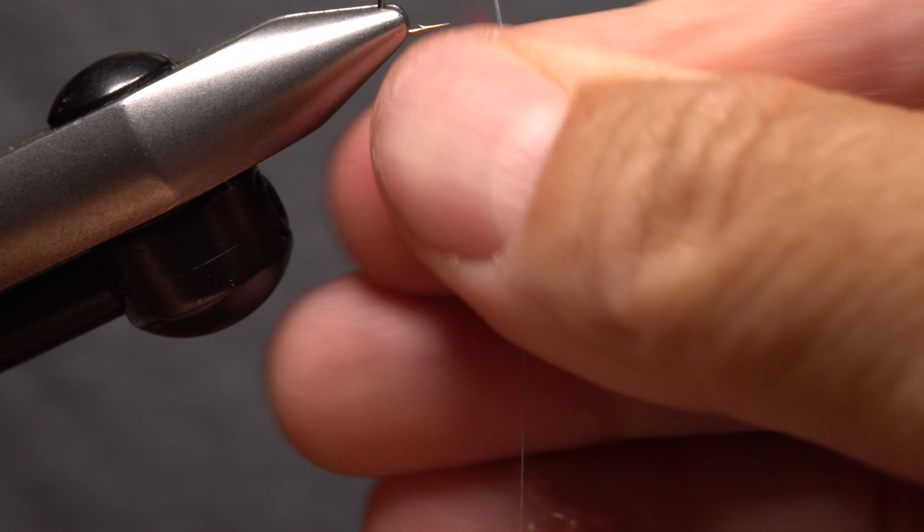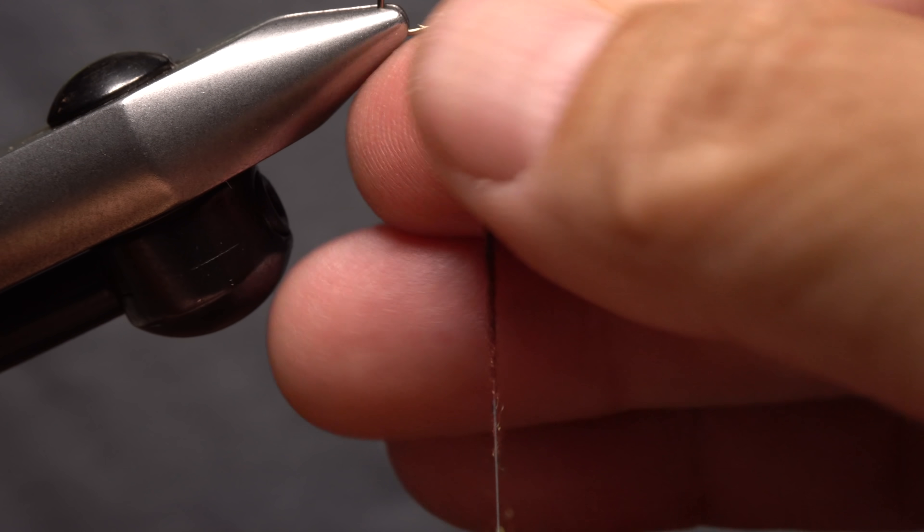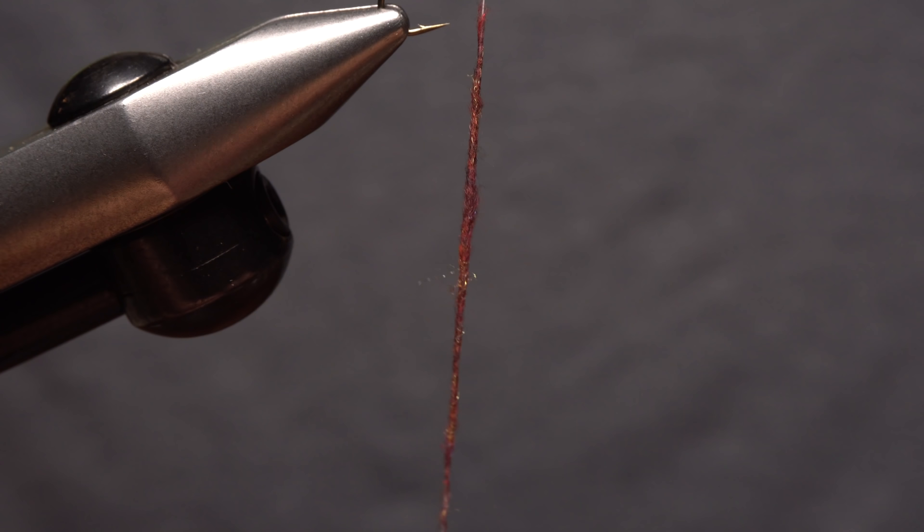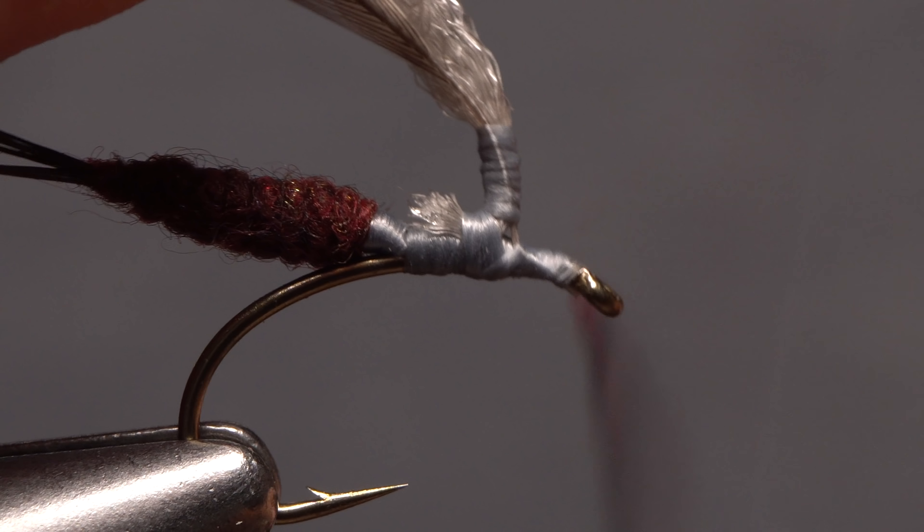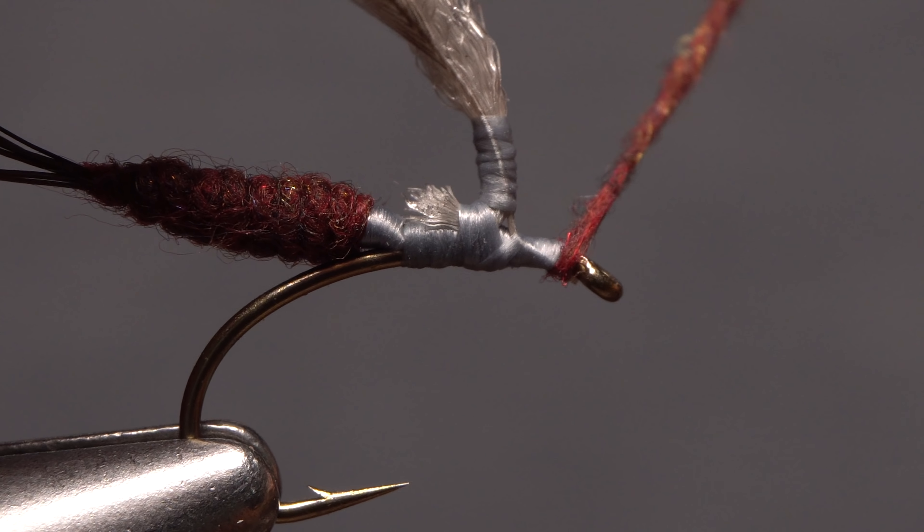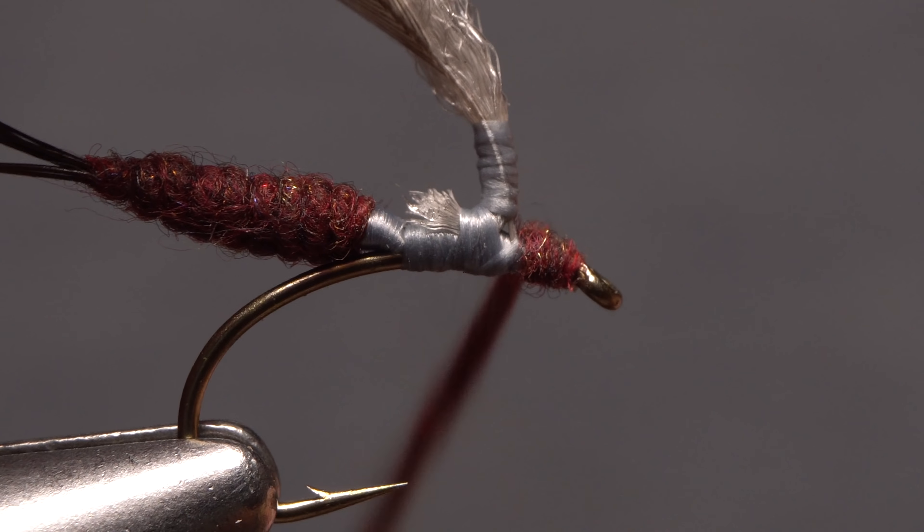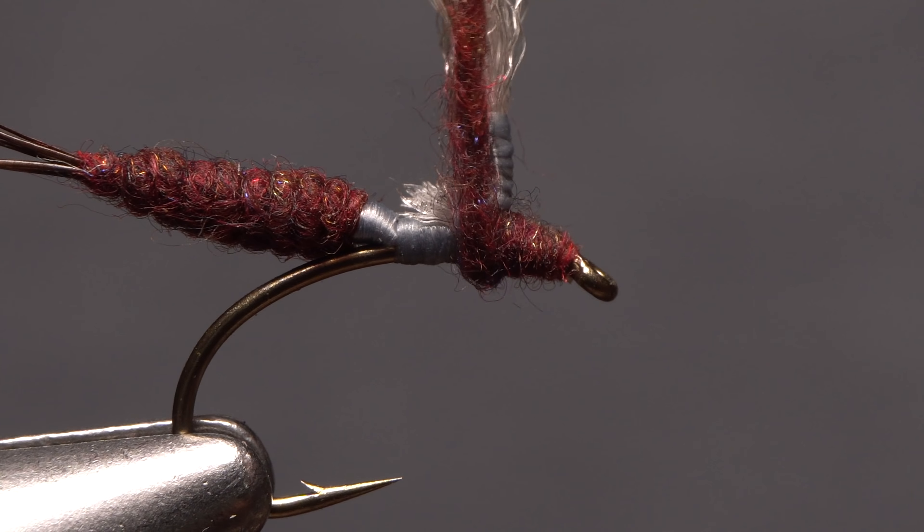Once again, reach for the Isonychia dubbing, and this time, use it to create a slender noodle on your tying thread about half the length of the previous one. Start taking wraps with the noodle, so the dubbing begins at the back of the hook eye. Then take touching wraps rearward to build up the thorax of the fly.